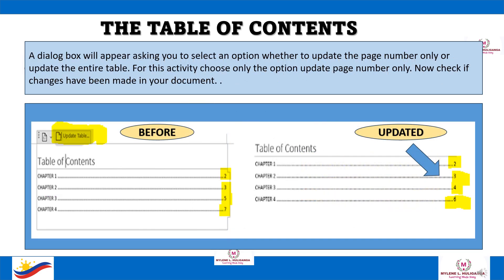A dialog box will appear, asking you to select an option whether to update the page number only or update the entire table. For this activity, choose only the option Update Page Number Only. Now check if changes have been made in your document.